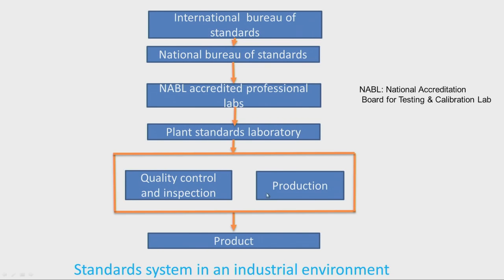In the manufacturing area, components are produced, assembled, and the final product is obtained. During production, the quality control department inspects all components. Due to continuous usage, instruments are subjected to wear and measurement error creeps in. To eliminate this, at regular intervals we compare all workshop instruments with the plant standards laboratory equipment, which are of higher accuracy. By comparing, we can determine the amount of error in the measuring instrument, which is noted on the instrument.